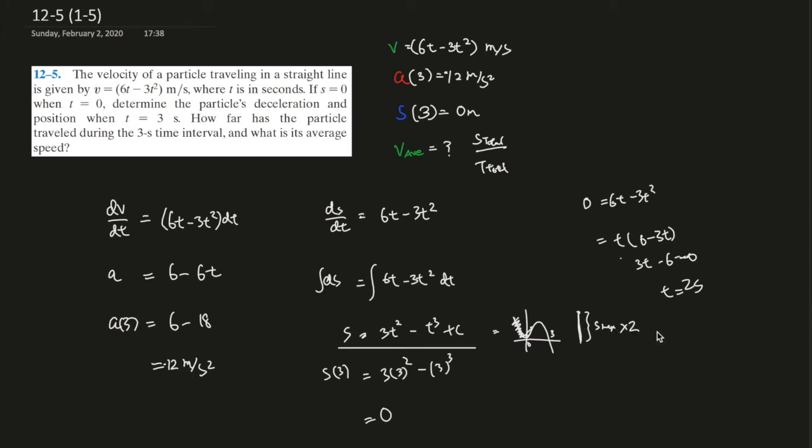So now we plug this t back into the distance equation, right? So it tells us what's the furthest this car, this particle, has traveled to. So 3 times 2 squared minus 2 cubed, right, equals s_max. So s_max gives us 12 minus 8, gives us 4 meters, right? Four meters, this is the maximum it has traveled, right?